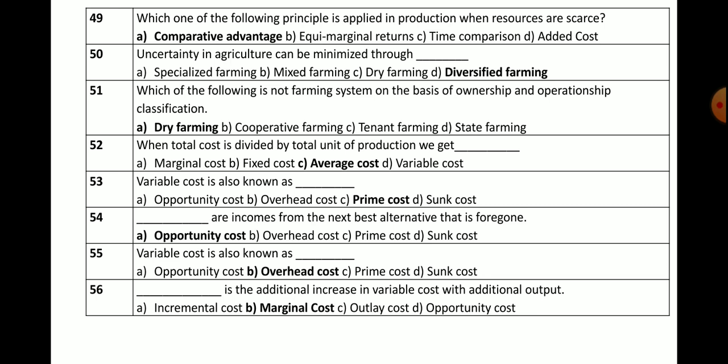Question number 52: When total cost is divided by total units of production (total yield), we get — options: marginal cost, fixed cost, average cost, or variable cost. The correct answer is average cost — when we divide total cost by total units of production, we get average cost.